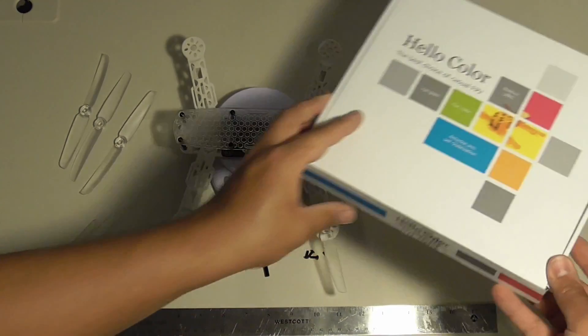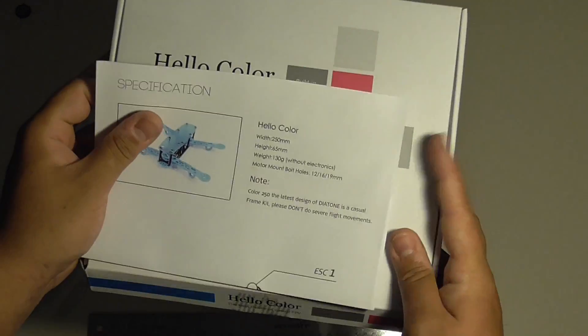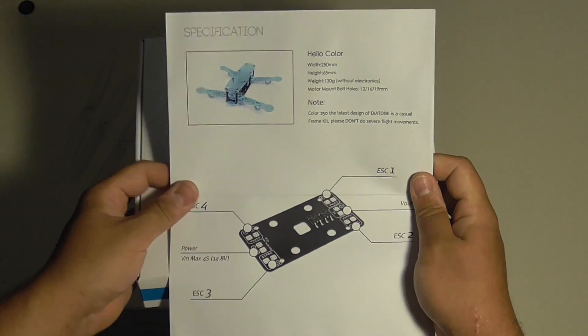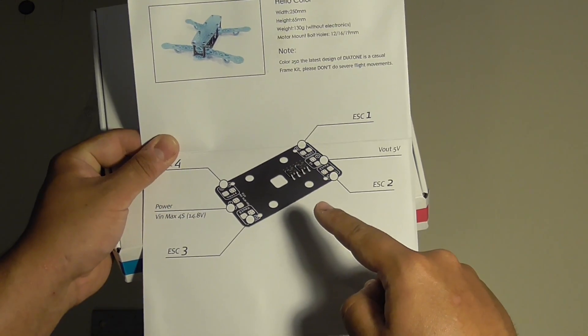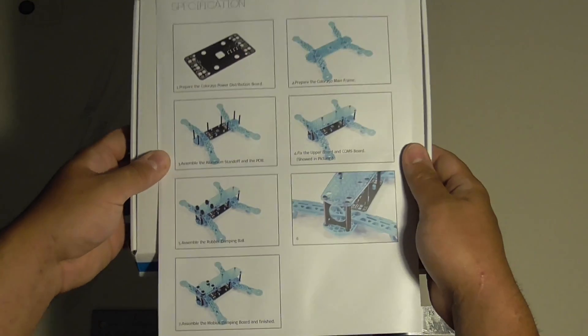Included in the kit is a set of instructions. The instruction sheet has some basic dimensions, some information on the power distribution board, and building instructions.